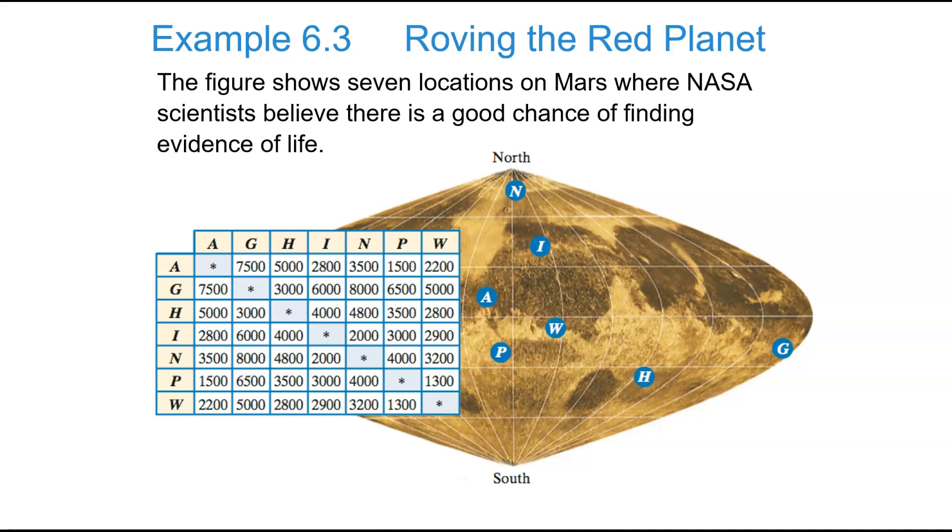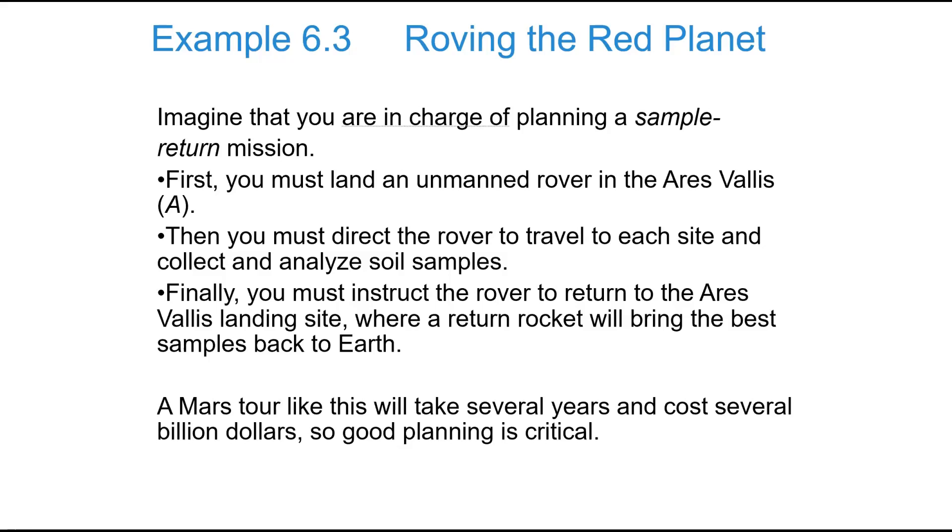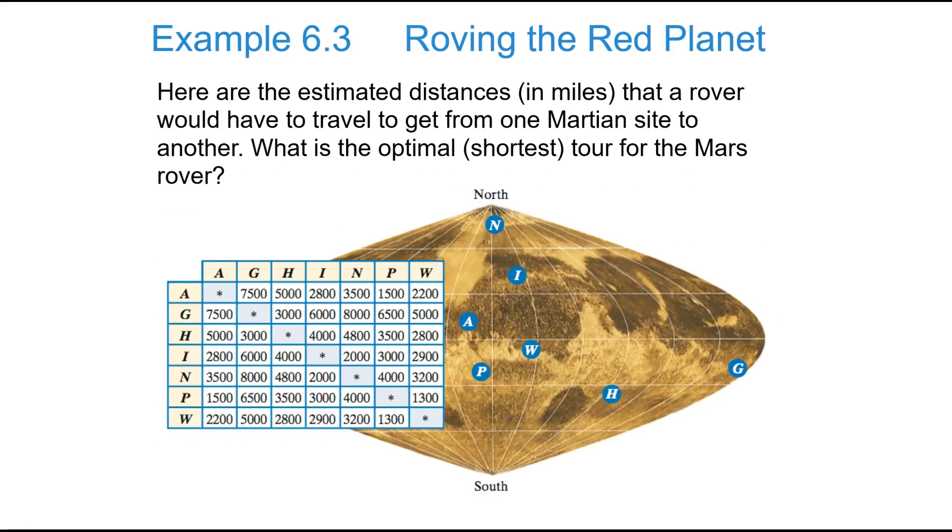And then these are the seven locations on Mars where NASA scientists believe would be a good chance of finding evidence on the red planet. And then they calculated these different distances. And you can take a read there. So we want the estimated distances. What is the optimal shortest tour? So that cost is distance.